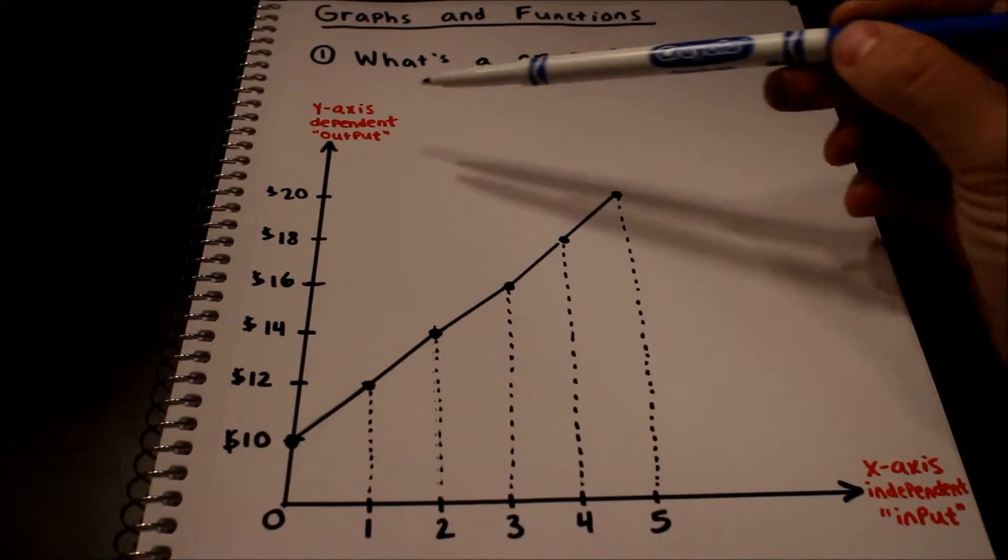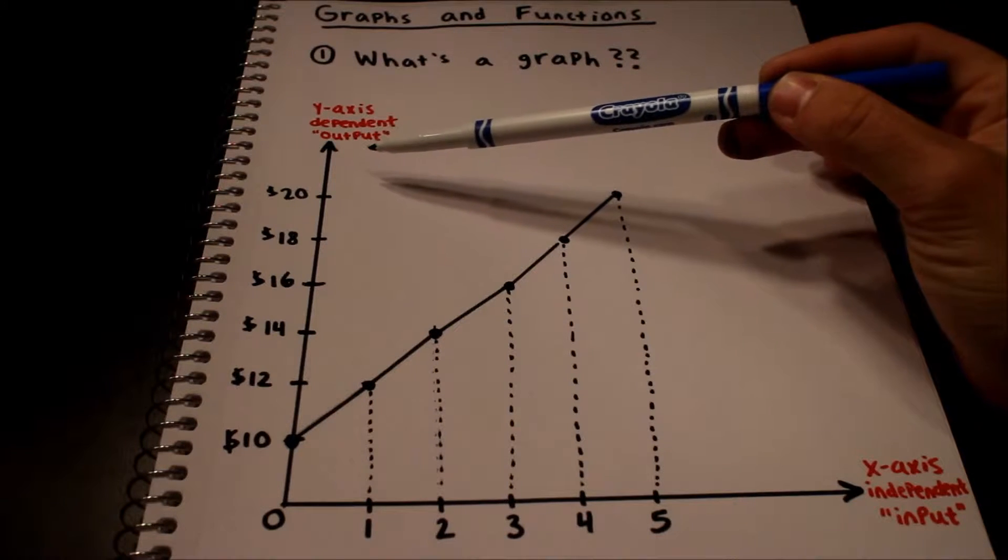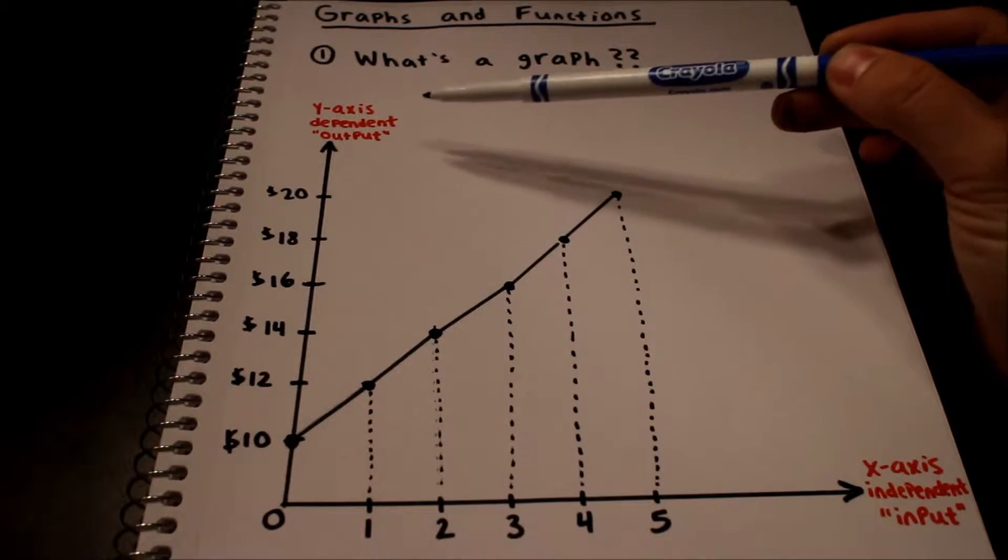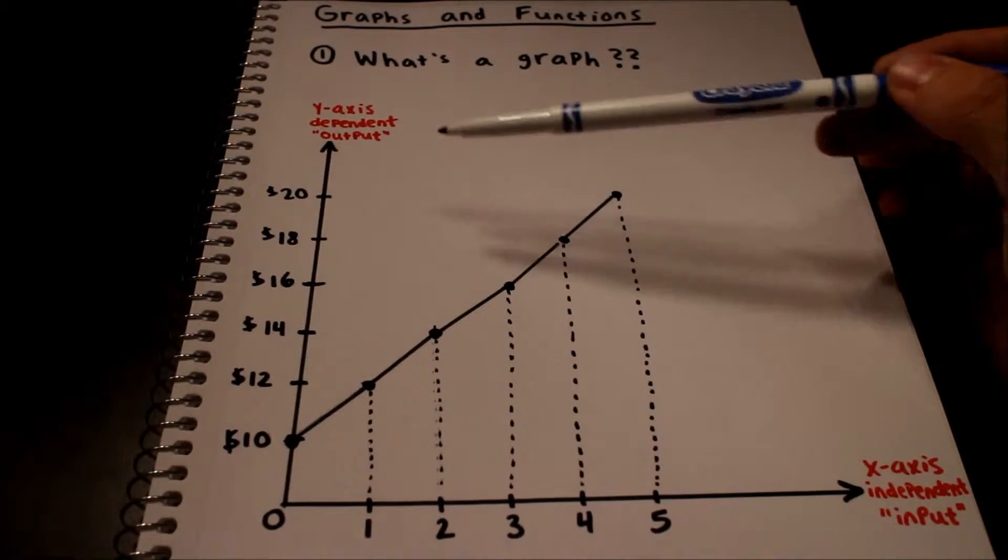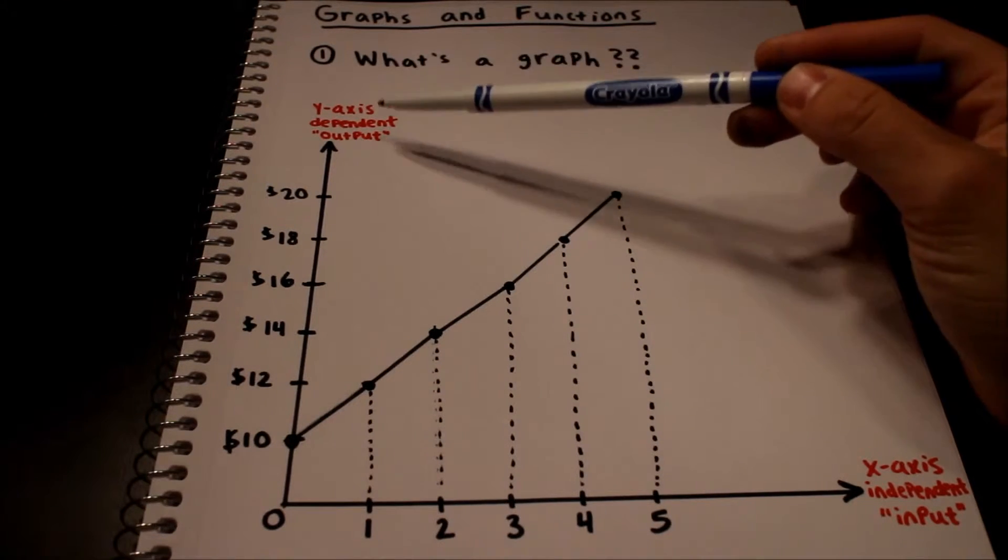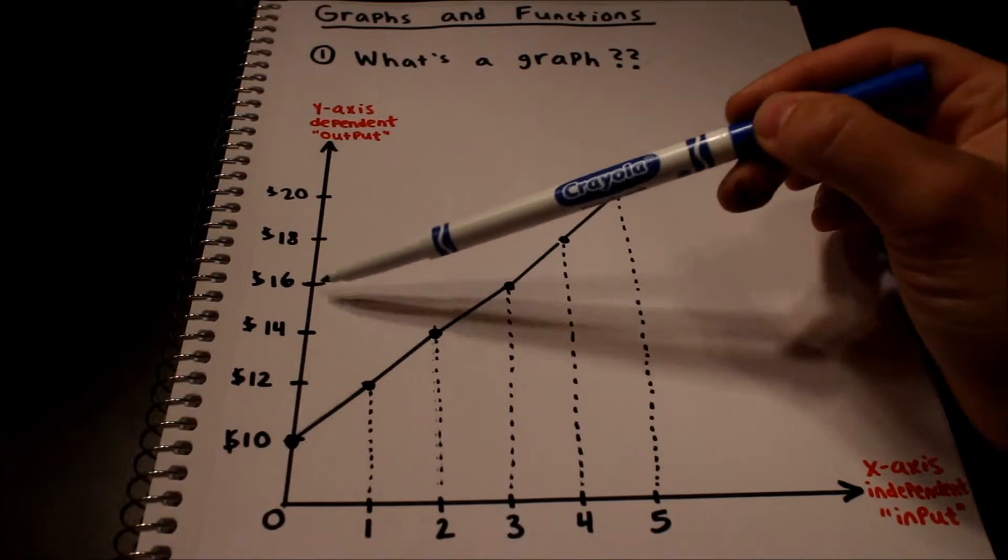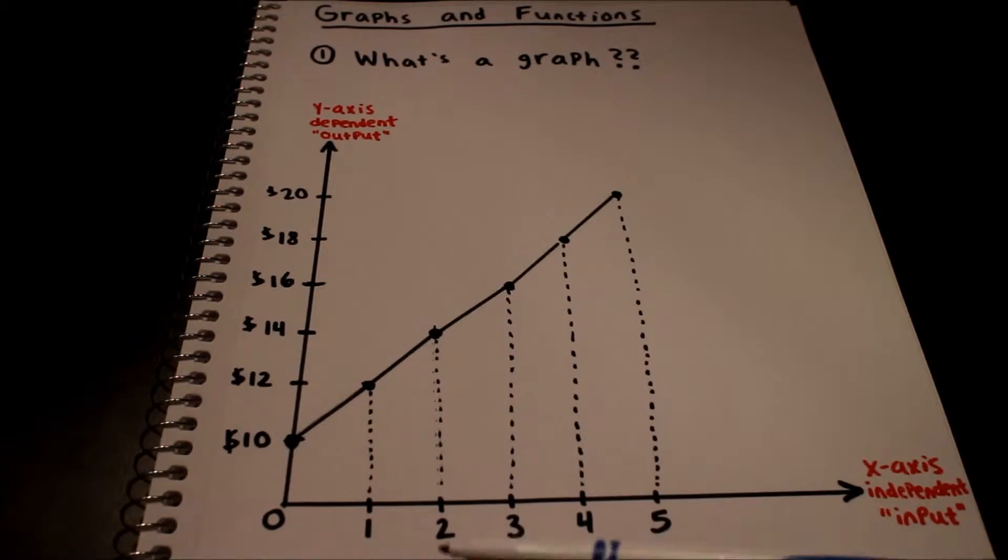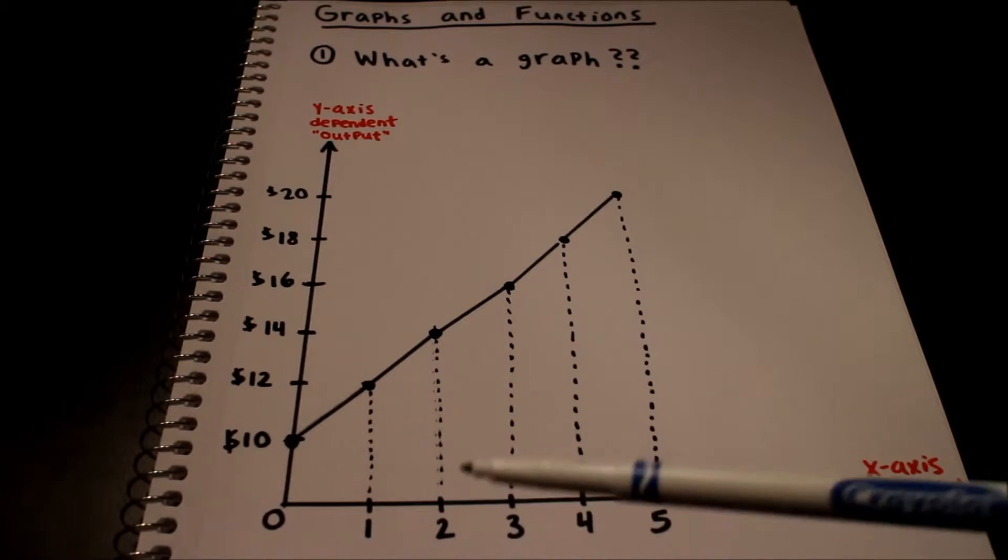This is the y-axis, which is sometimes called the dependent axis, which is also sometimes called your output. That means that this axis, all the values that you see here, depend on what value you're looking at on the horizontal.